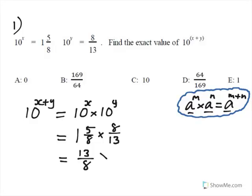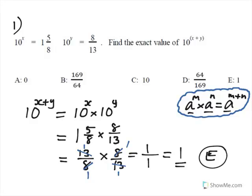That's 1 and 5 eighths times 8 over 13, which is quite nice. You can see now that this 8 will cancel with that 8, this 13 will cancel with that 13, to leave you the top 1 times 1 is 1, denominator 1 times 1 is 1. So the answer is 1, and the correct option is E. I have no doubt you managed that quite easily. Don't worry if you didn't, there's nothing wrong with that at all.